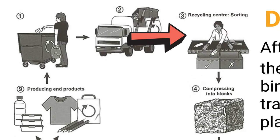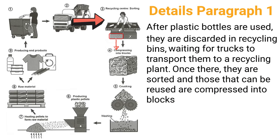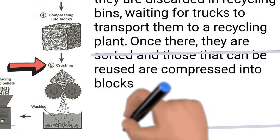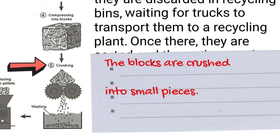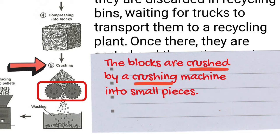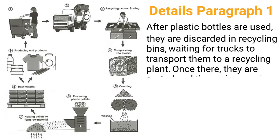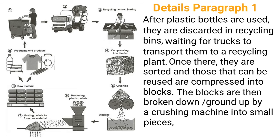Next, sorting. Only those bottles that can be reused are compressed into blocks. 'Once there, they are sorted, and those that can be reused are compressed into blocks.' The next step is crushing. You can simply say 'the blocks are then crushed into small pieces.' However, if you want to include the machine in your writing, saying 'crushed by a crushing machine' sounds repetitive. Instead, replace the verb 'crush' with the phrasal verb 'break down' or 'grind up': 'The blocks are then broken down or ground up by a crushing machine into small pieces.'